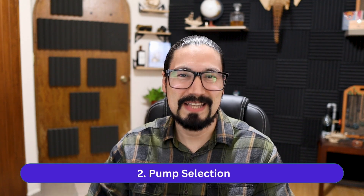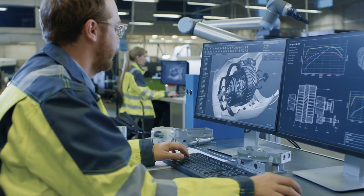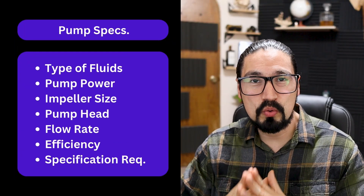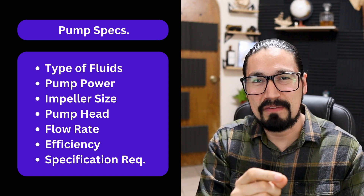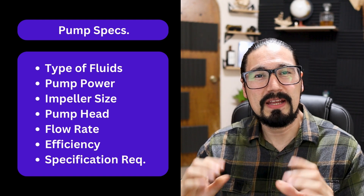The very first steps involve pump selection. If you have incorrect pumps — pumps that are oversized or not suited to the required temperatures, pressures, or viscosities — you need to select the correct pump. This requires knowing your system properly and the types of pumps available, including fluid types, impeller size, head, flow rate, and efficiency specifications.